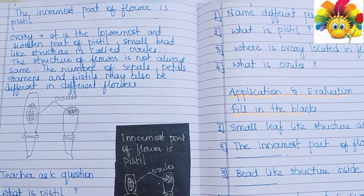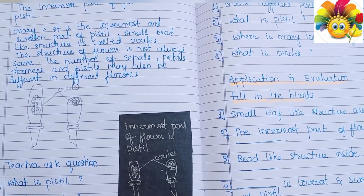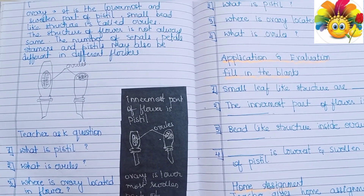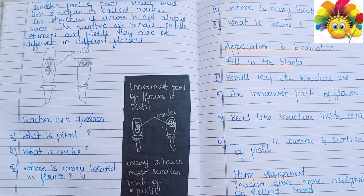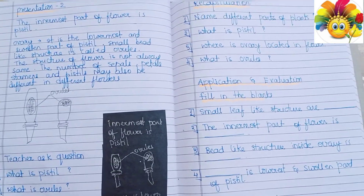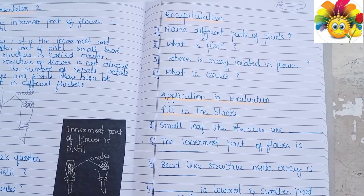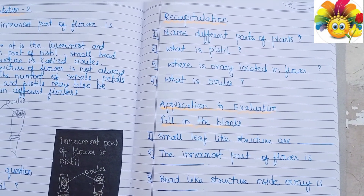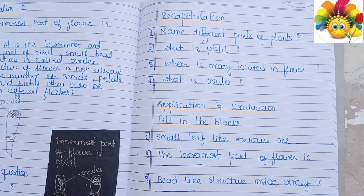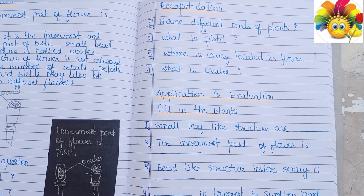You can easily get the PDF of this lesson plan. Now, the recapitulation part — here we have to ask questions related to whatever we have taught to students. You can see I have added four questions. After that, application and evaluation — for that we have to give fill-in-the-blanks exercises to students.